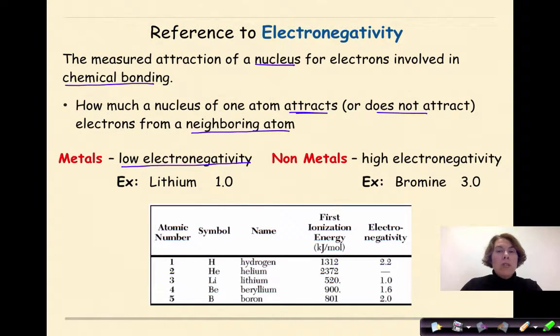While non-metals have high electronegativity values, for example, bromine is three.